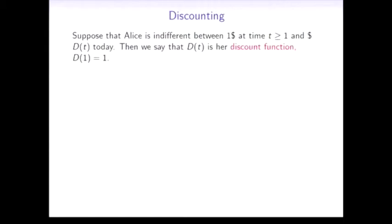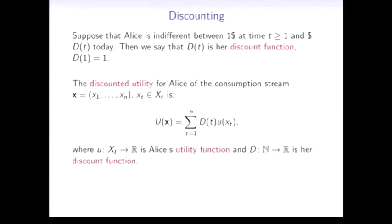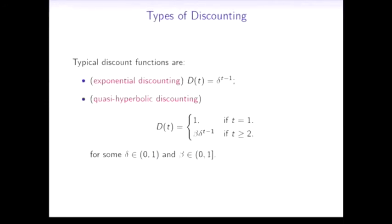Today I'm going to talk about different rules which lead to a particular form of discounting. Let's take a look at the definition first. Suppose that Alice is indifferent between one dollar at time t and D(t) dollars today. Then we say that D(t) is her discount function.